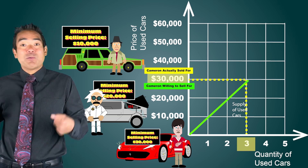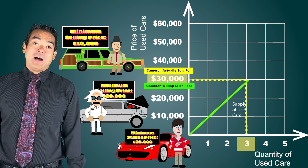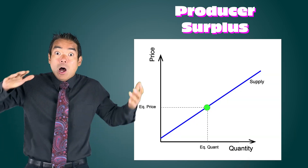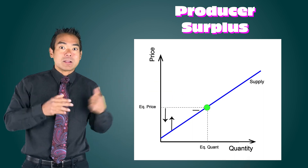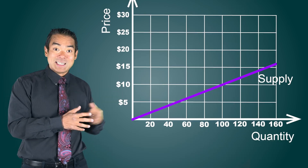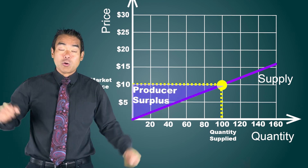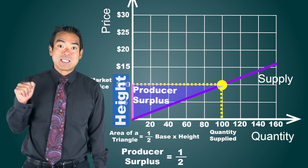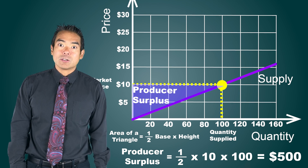Cameron doesn't get any producer surplus — he needed $30,000 and he got $30,000, but that's fine. On a market supply curve, we represent producer surplus as the area above supply, below price, and to the left of the total quantity that producers sell. On this supply curve, if market price is $10 and quantity supplied is 100, then the area of this triangle represents total producer surplus, calculated as one half times 10 times 100, for a total of $500 of producer surplus.